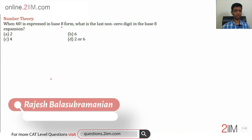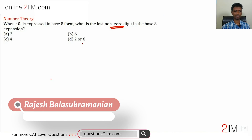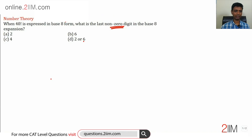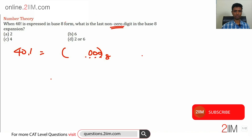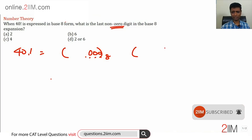When 40 factorial is expressed in base 8 form, what is the last non-zero digit in the base 8 expansion? The question itself hints that a few of the last digits are going to be zero. When we write 40 factorial in base 8, we're going to have a few trailing zeros. Now let's find out how many zeros there are, and then we'll come to the rest of the question: what is the highest power of 8 that divides 40 factorial?